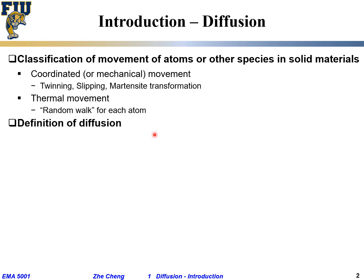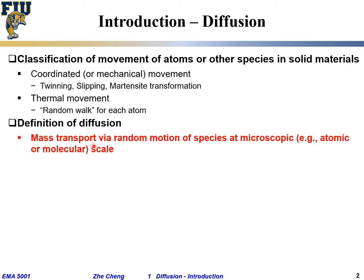These two are the basic classifications of atom movement within solid material. With that in mind, let's talk about the definition of diffusion. In short, diffusion is a type of so-called mass transport — 'mass' means the material itself, 'transport' means motion from one location to another — through random motion of species. These species can be atoms, molecules, or other things, and their motion occurs at a microscopic scale, on the order of nanometers or angstroms.